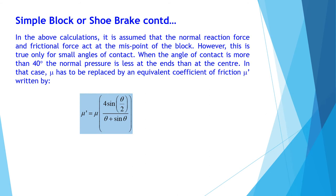Continuing with the simple block or shoe brake: in the above calculation it is assumed that the normal reaction force and friction force act at the midpoint of the block. However, this is true only for small angles of contact. When the angle of contact is more than 40 degrees, the normal pressure is less at the ends than at the center. In that case, μ must be replaced by an equivalent coefficient of friction μ′, where μ′ = μ × 4 sin θ / (2θ + sin 2θ), and θ here is the half contact angle of the block.